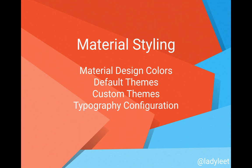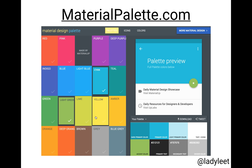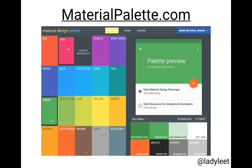For material styling, there are a few different things to take into consideration. Again, the material design colors that you have, the default themes, the custom themes, and recently there is a typography configuration that you can check out. I really love using materialpalette.com as a way to choose my colors. You can go to the website, play around with the different colors, see what works, and you can actually download the palette yourself.